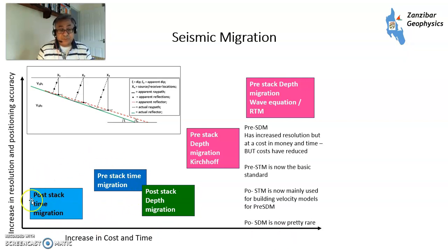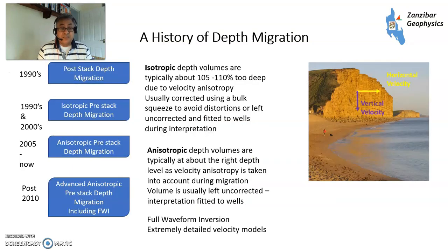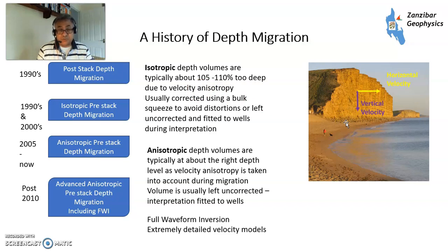Quite often you need to produce data in simpler domains first to build a more detailed velocity model. A brief history: back in the 1990s when I first started, you had post-stack depth migration which was isotropic — using a constant set of velocities without taking anisotropy into account. The velocities were always 5 to 10 percent too deep, so you'd correct for that using bulk stretch or bulk squeeze, but it wasn't really satisfactory.